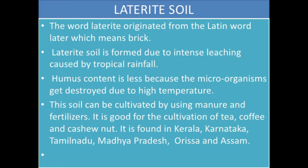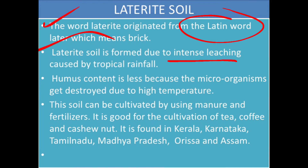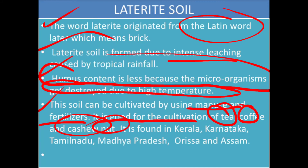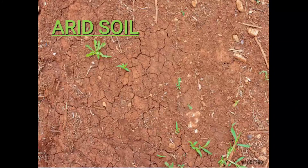The fourth type is laterite soil. The word 'laterite' is derived from the Latin word meaning 'brick.' It forms due to intense leaching caused by tropical rainfall, where water leaches through the soil. The humus content is less because microorganisms get disturbed due to high temperature. This soil can be cultivated using manure and fertilizers. It is good for tea, coffee, and cashew nuts, and is found in Karnataka, Tamil Nadu, Madhya Pradesh, Odisha, and Assam.